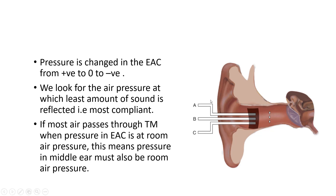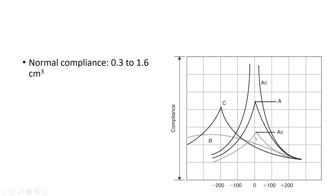Compliance is the measure of how little sound is reflected back and recorded by the microphone. After using this probe and recording the compliance of the eardrum across different pressures, we get a graph. On the x-axis is the pressure created in the external auditory canal by the probe, in decapascal — positive and negative. On the y-axis we have compliance. Curve A is the normal curve — normal compliance is 0.3 to 1.6 cm³. The curve peaks at atmospheric pressure, meaning compliance is maximum at 0 decapascal. The tympanic membrane has least resistance and most mobility, confirming that middle ear pressure equals atmospheric pressure.